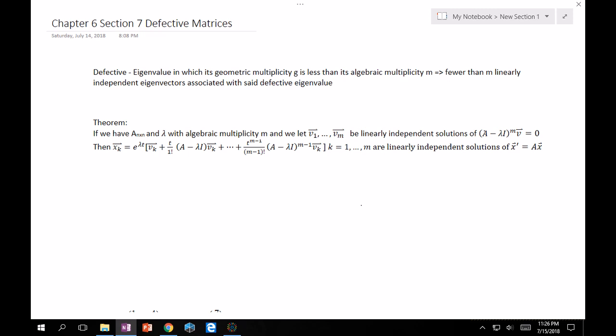A defective matrix means it has an eigenvalue in which its geometric multiplicity, let's call it G, is less than its algebraic multiplicity, M. So, what this really means is there's fewer than M linearly independent eigenvectors associated with said defective eigenvalue. It's kind of like the W vector from 2x2 case, except now we have to deal with this theorem because we're dealing with higher order systems.